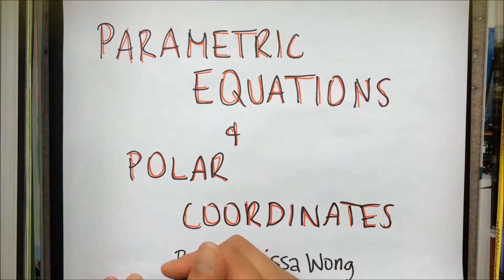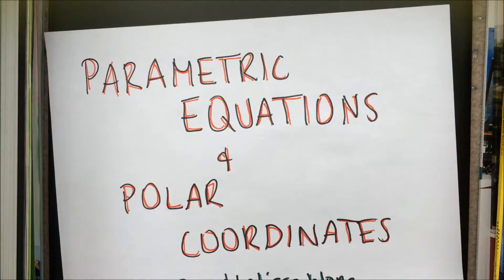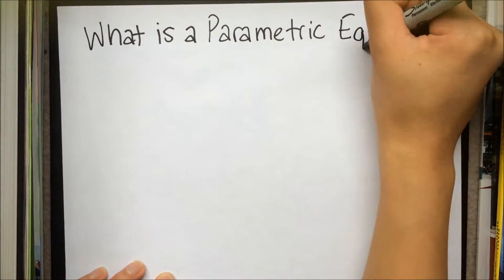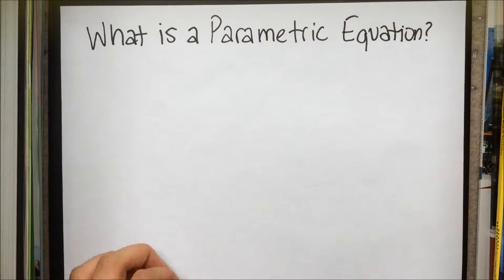Parametric equations and polar coordinates. Parametric equations in 2D are two functions, x of t and y of t, that exist on the same domain.